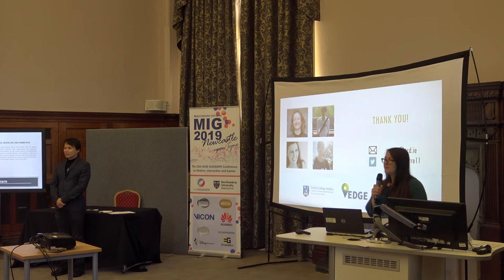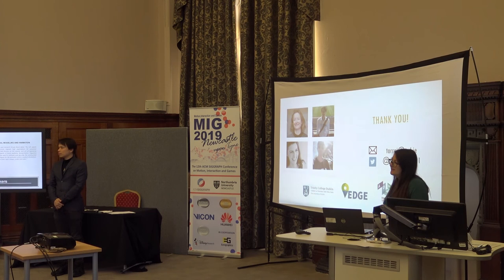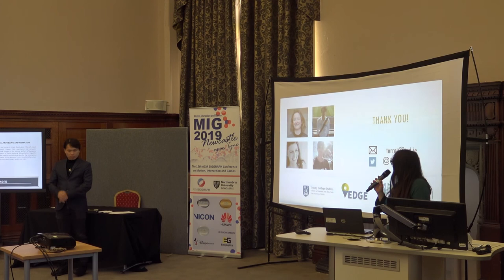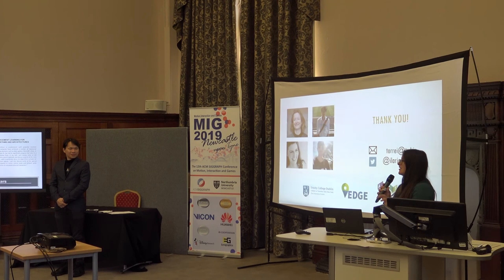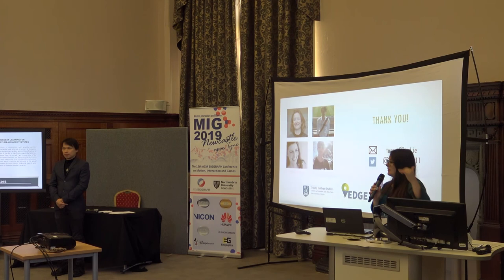Second question: Could the fact that people trusted the cartoon agent more also be related to an uncanny valley effect? Yes, definitely. Very often in human-machine interaction people assume an agent should be more anthropomorphic, but when you look at how people actually behave, sometimes it might be better to have a less anthropomorphic agent. People might form very high expectations of a very anthropomorphic agent, and when those expectations are not met, that is a problem. So you might want to start with a less anthropomorphic agent so that expectations are exceeded rather than reduced.